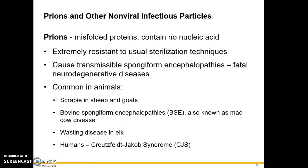Moving on to prions and other non-viral infectious particles: prions are protein-based — they are misfolded proteins that don't contain nucleic acid, which is largely how they differ from a virus. They are very resistant to most sterilization techniques. They can cause transmissible spongiform encephalopathies, which are fatal neurodegenerative diseases that infect the nervous system and brain. Prions are commonly found in animals; examples include scrapie, a common disease in sheep and goats.